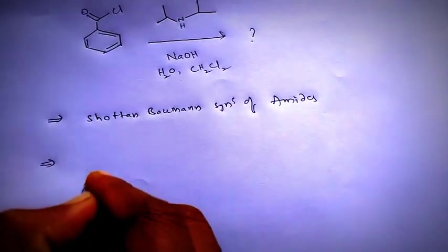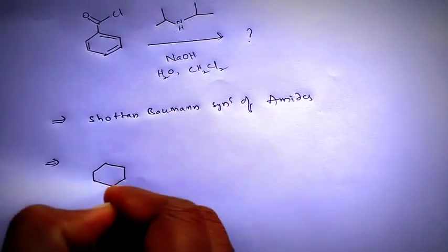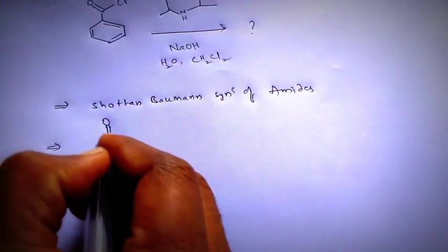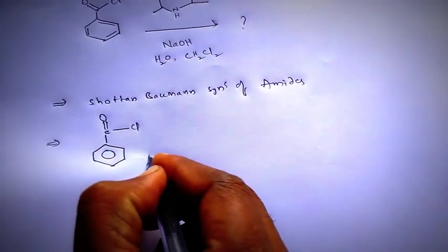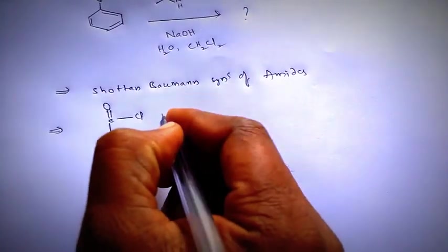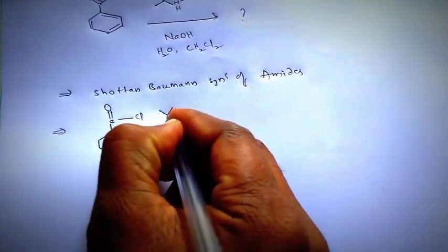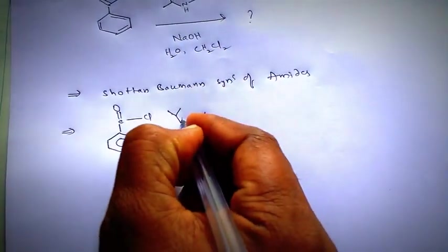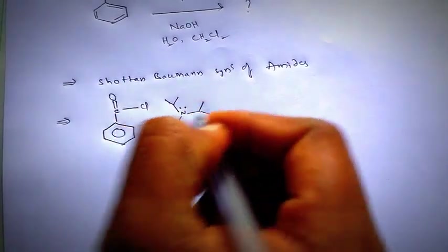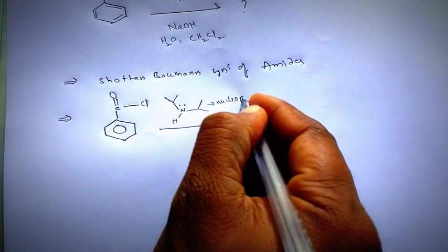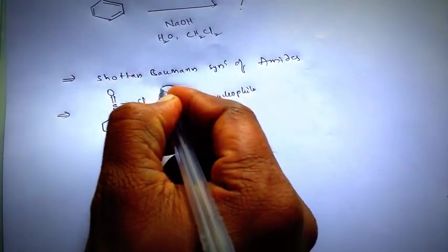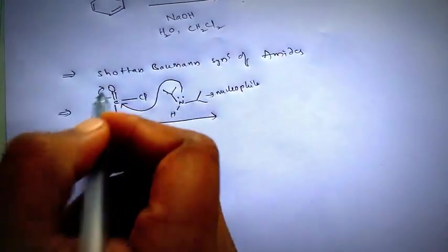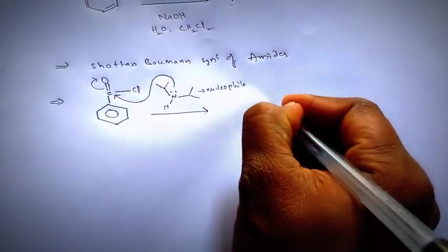And if you observe the mechanism, so this base acts as nucleophile and attacks this carbonyl carbon and this electron goes on to the oxygen.